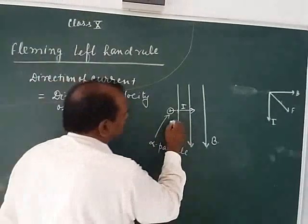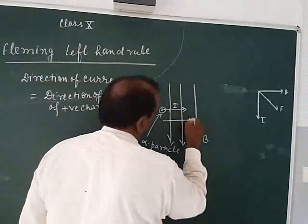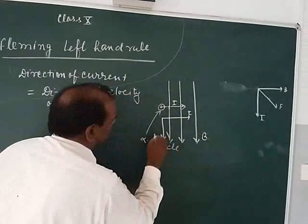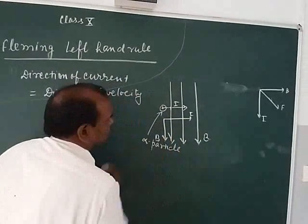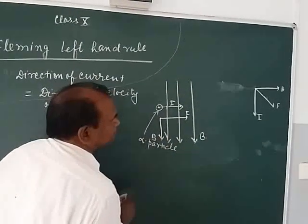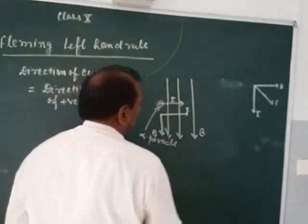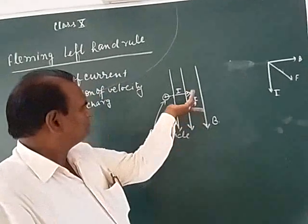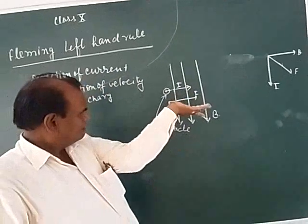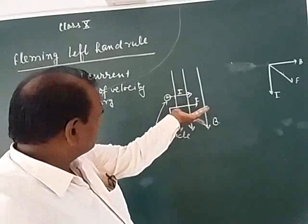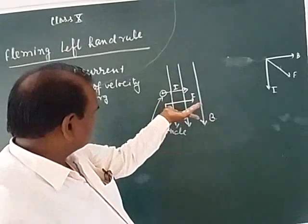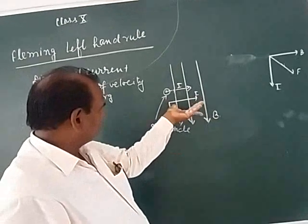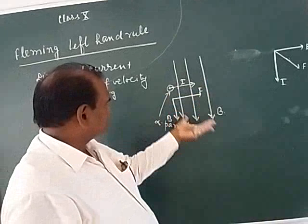This is the direction of current I, and this is the direction of magnetic field. Given this direction of current, what should be the direction of force? The direction of force must be inward — inward, perpendicular to both.